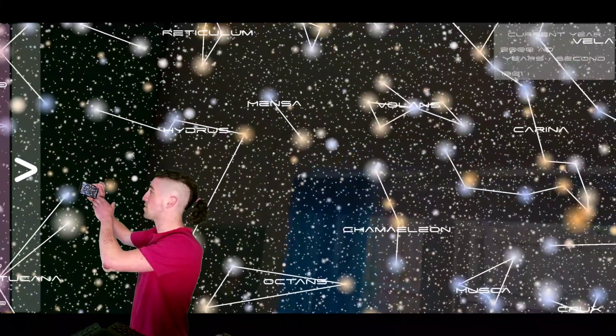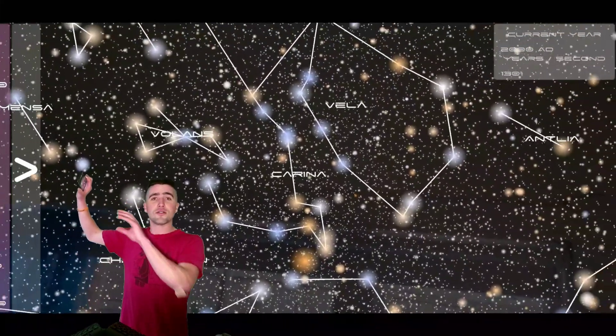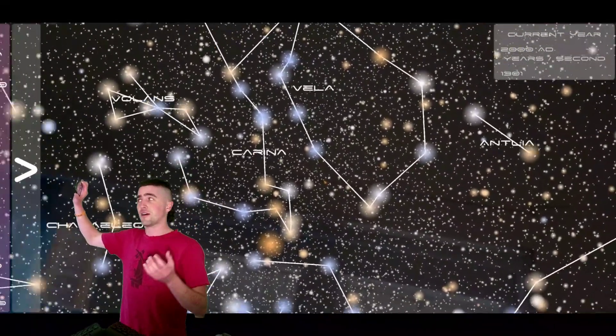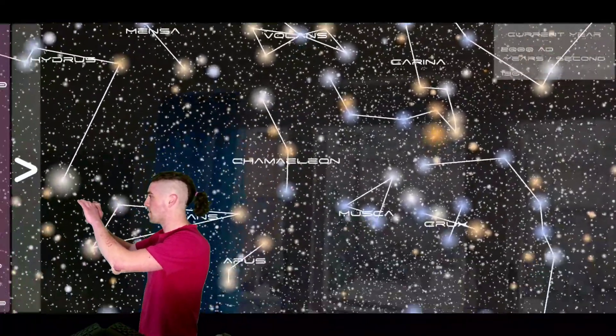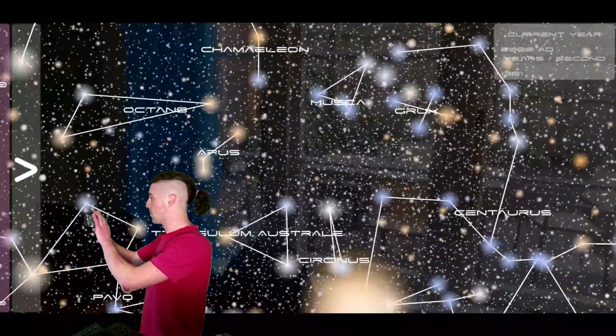They can say it must be in the Mensa constellation or this sort of thing. There's a constellation for each part of the night sky. Yeah, and I believe there's 88 in total.